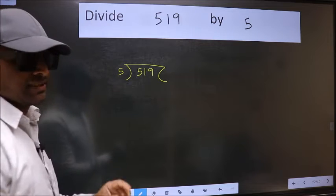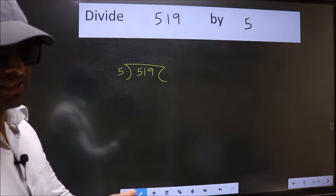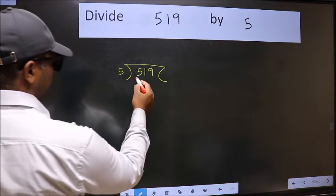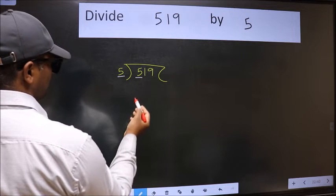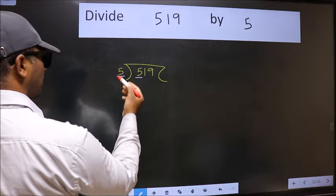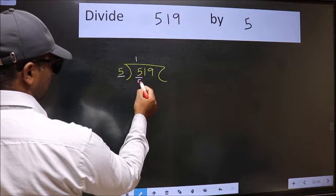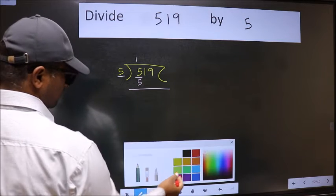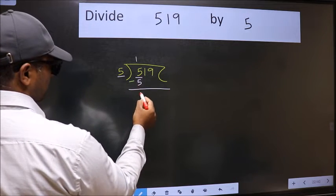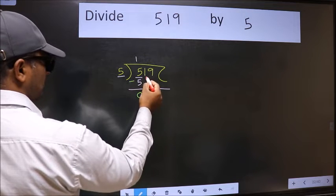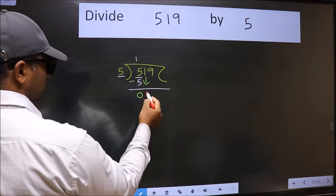This is your step one. Next, here we have 5 and here also 5. When do we get 5? In the 5 table, 5 once is 5. Now we should subtract, we get 0. After this, bring down the beside number.